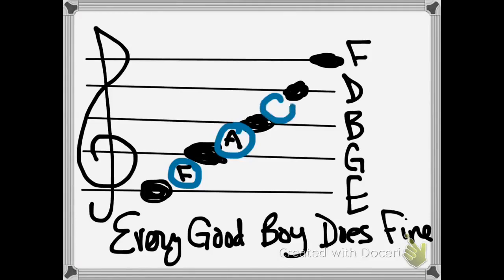Now we need to figure out this note in this space. What comes between B and D? A, B, C — good. And the last space comes between D and F: A, B, C, D, E. Notice the spaces spell FACE — F, A, C, E. Space spells face.